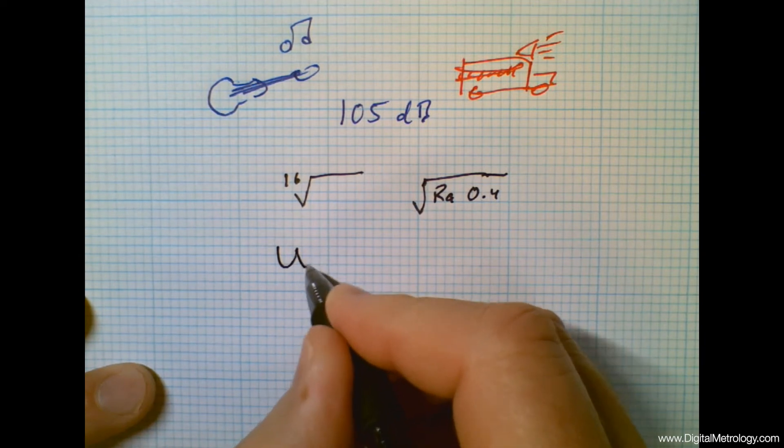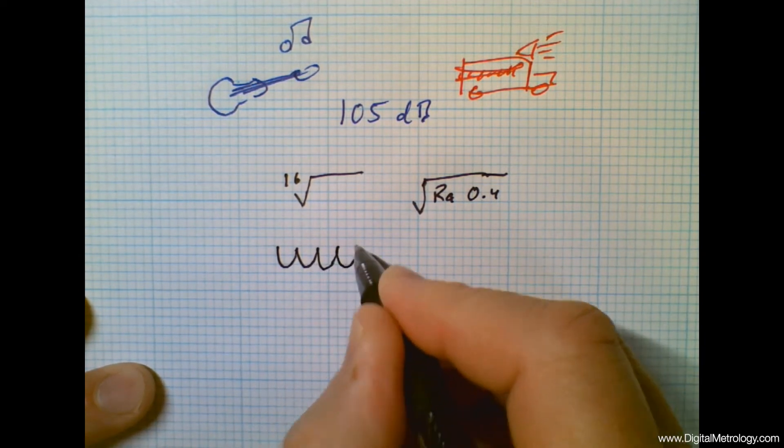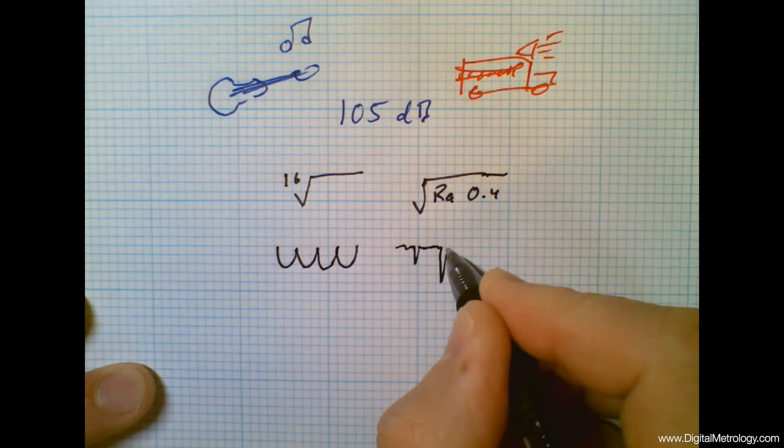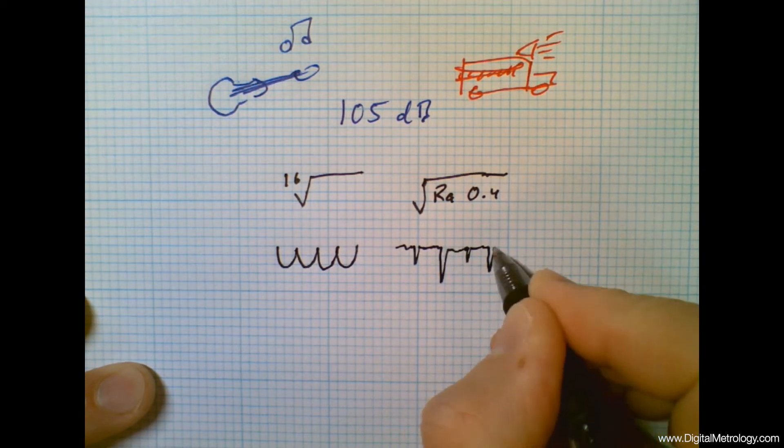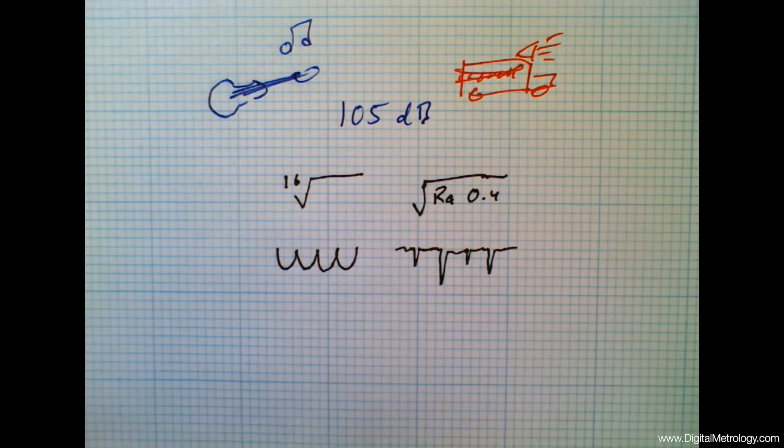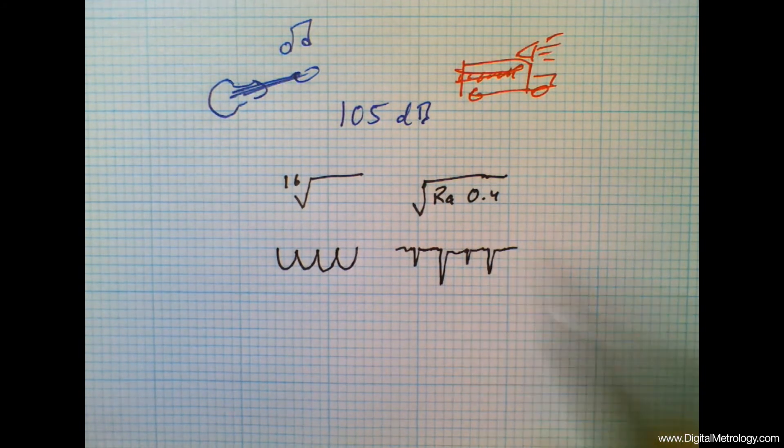For example, a surface could be scalloped and full of peaks or a surface may be plateaued and mostly valleys and these would have the same roughness, the same RA value.